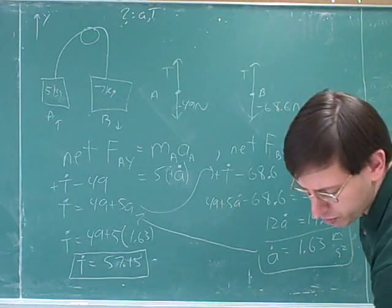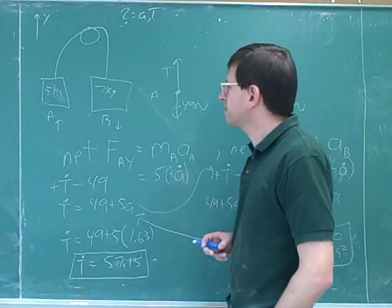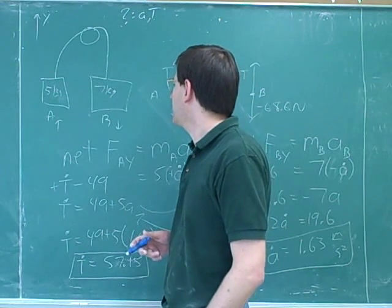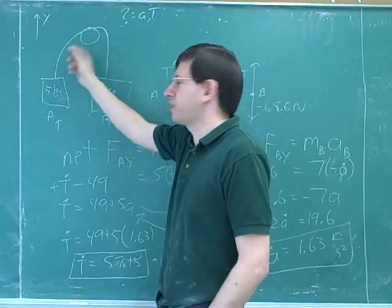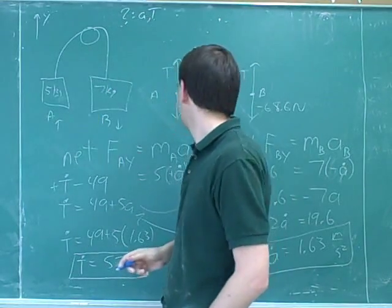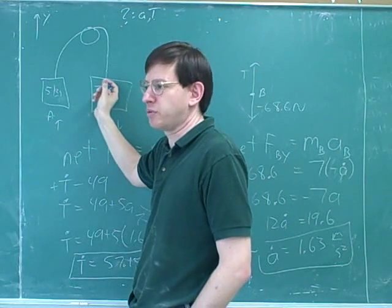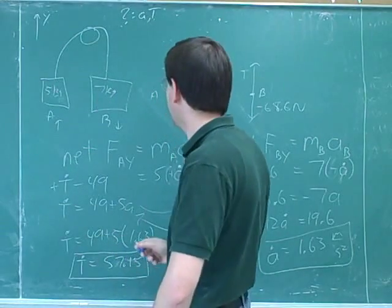Okay, so again, we talked through the steps here. Let me point out some common mistakes here. A lot of students might think that maybe this force would be the weight. Some people think that the weight is transmitted through the rope. So for example, they might say, oh, this has a weight of 49 Newtons, so it should be pulling on this object with 49 Newtons of force.